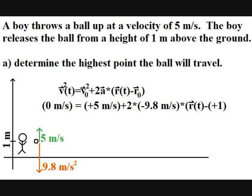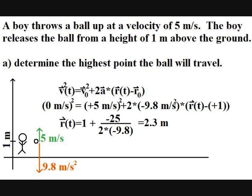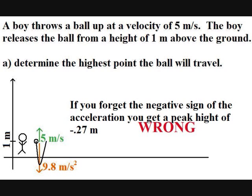Now substitute in the values and solve for position at time t. Remember that acceleration has a negative value. The solution is a height of 2.3 meters above the ground. Notice what happens if you forgot to put the negative sign for the acceleration. You end up with an incorrect answer of negative 0.27 meters. And that makes no sense. How could the highest position of the ball be negative 0.27 meters below the ground? Obviously, this is an incorrect answer. And that demonstrates the importance of the careful use of sign convention.